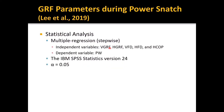For statistical analysis, multiple regression analysis was used to evaluate the prediction of power using ground reaction force parameters, and to determine the best combination of ground reaction force parameters for maximizing power during the power snatch. VGRF, HGRF, VFD, HFD, and H-COP were used as independent variables, and power was used as the dependent variable. SPSS was used and the significance level was set at 0.05.